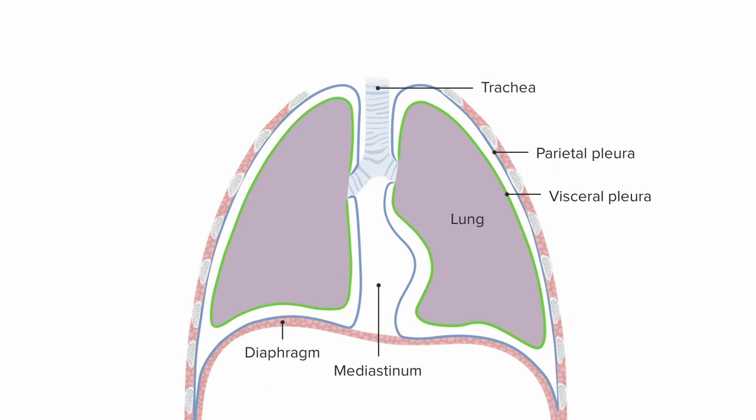In between the parietal and visceral pleura is a little space called the pleural cavity. Normally it's very small — it's exaggerated here so you can actually appreciate that there is a space. Normally there's a very small amount of fluid called pleural fluid in this cavity, which helps reduce friction between the two layers of pleura as the lungs expand and contract during breathing.